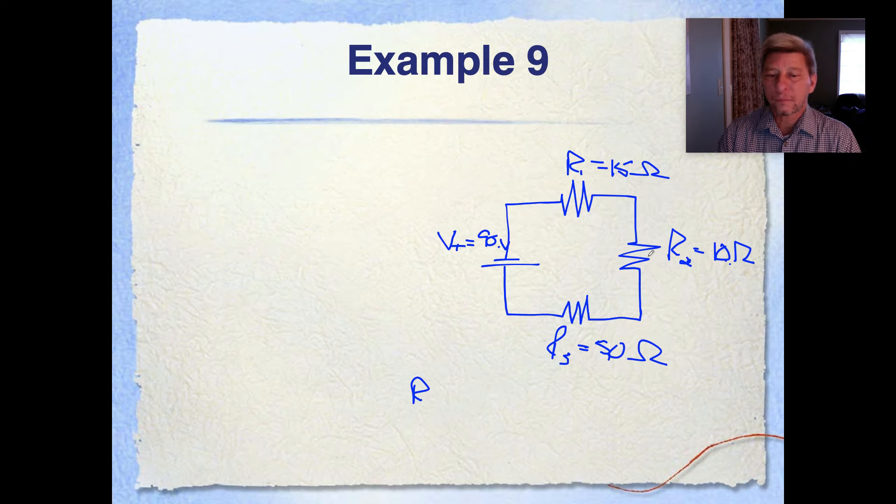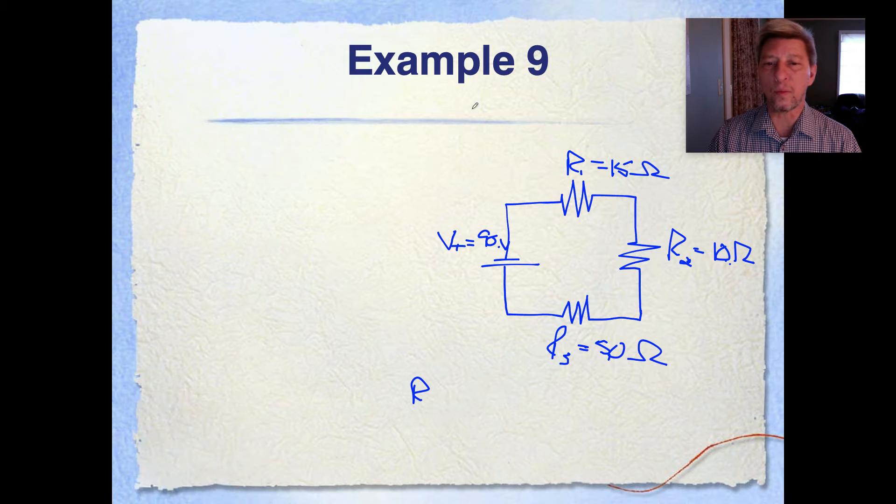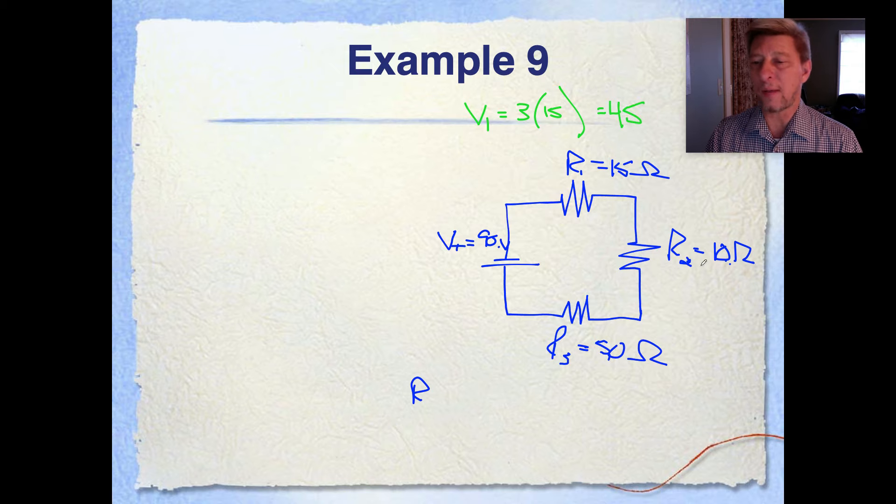And so now that I know the total current, let's go back here. Now, in this case, if I have a resistance of 15 ohms, well, my voltage at number one is going to be three amps times 15 ohms, or 45.